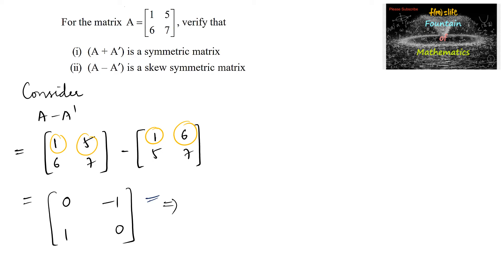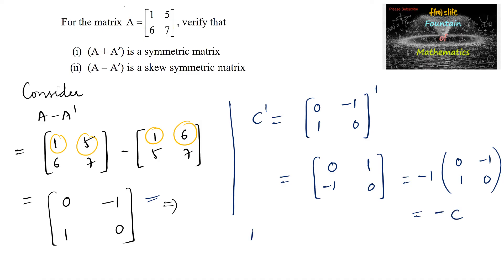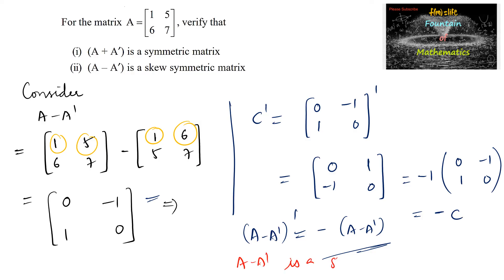Let us consider this matrix as C. Then C transpose is the transpose of [[0,-1],[1,0]], where the first column becomes the first row and the second column becomes the second row. This gives us (A - A^T)^T equal to the negative of (A - A^T). Therefore we can conclude that A minus A transpose is a skew-symmetric matrix.